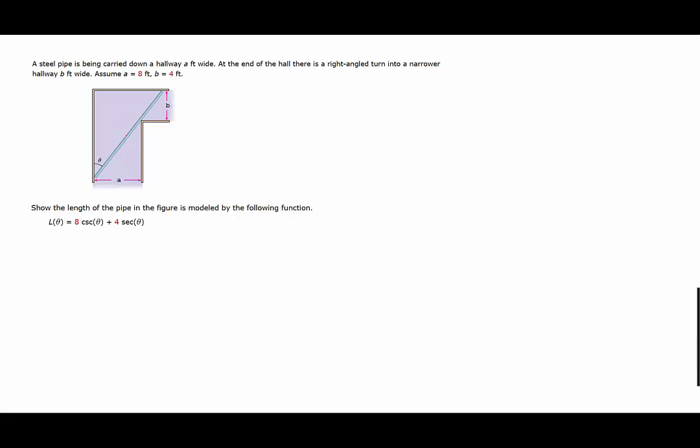We can form two right triangles from the picture that might be helpful. We'd have one here and another here. A right angle here and a right angle here. So let's call this part of the pipe L1 and this part L2 so that the total length of the pipe could be found by adding the two parts together.